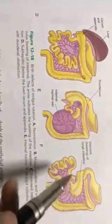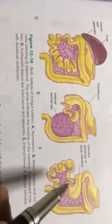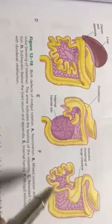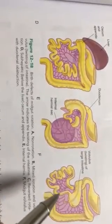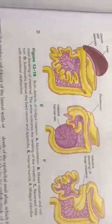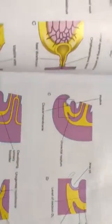Sometimes, if the intestinal loops go in an improper way, it will produce something called volvulus — it will obstruct all the intestine. That is called volvulus, and it may lead to duodenal and intestinal obstruction.